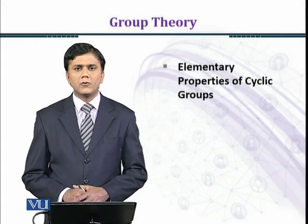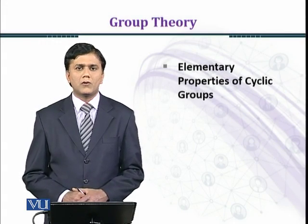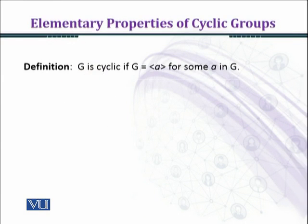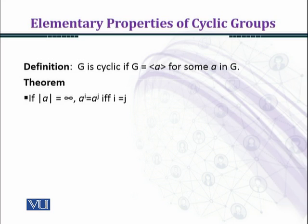In this module we shall discuss some more properties of cyclic groups. Let G be a cyclic group generated by an element a. If the order of a is infinite, then a^i equals a^j if and only if i equals j.